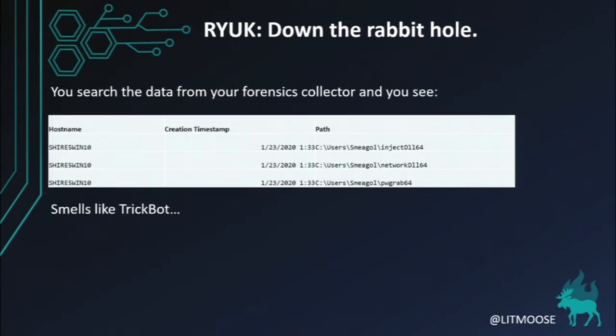You search your data and start to see things come up. Under user Smeagol you see some curious DLLs: inject_dll64, network_dll64, pwgrab64. What could these be? Smells like TrickBot. We don't see the TrickBot executable itself, but we see the modules associated with it. The really nasty one is inject_dll64 — it runs a collection script, usually has a C2 to beacon back out, and helps propagate and drop the ransomware. A lot of times when we see Ryuk, we see either Emotet or TrickBot scattered throughout the environment as part of the propagation mechanism.